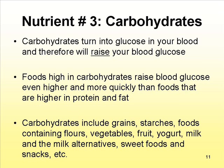Nutrient number three: carbohydrates. Carbohydrate is very important for the body and also contains calories. Carbohydrates turn into glucose in your blood and therefore will raise your blood glucose — but remember that it is a healthy food. Foods high in carbohydrates raise blood glucose even higher and more quickly than foods higher in protein and fat. Carbohydrates include grains, starches, foods containing flour, vegetables, fruit, yogurt, milk and milk alternatives, sweet foods, and snacks.